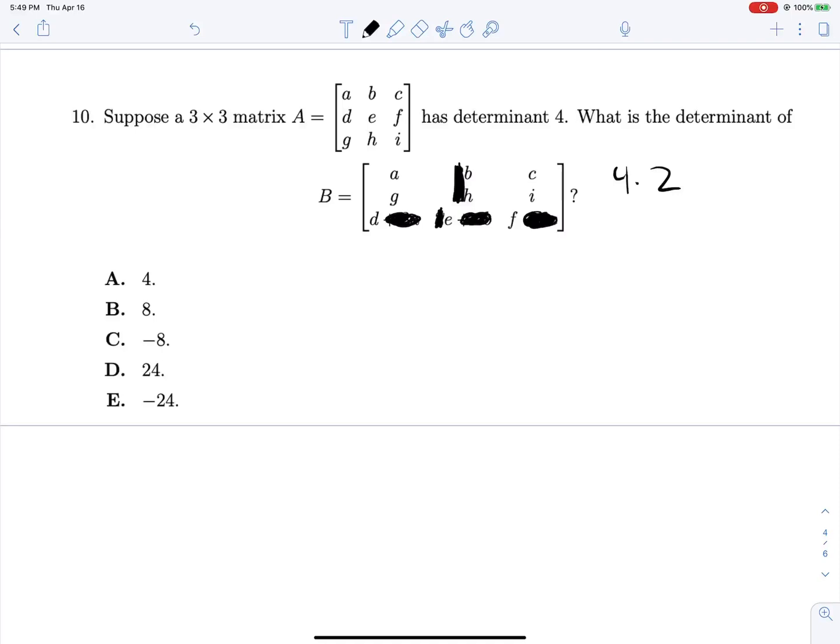Now we have a, b, c, g, h, i, d, e, f. So we need to switch rows 2 and 3 there. So that's a factor of negative 1. And now we're left with a, b, c, d, e, f, g, h, i. That is the negative 8 that we're looking for.